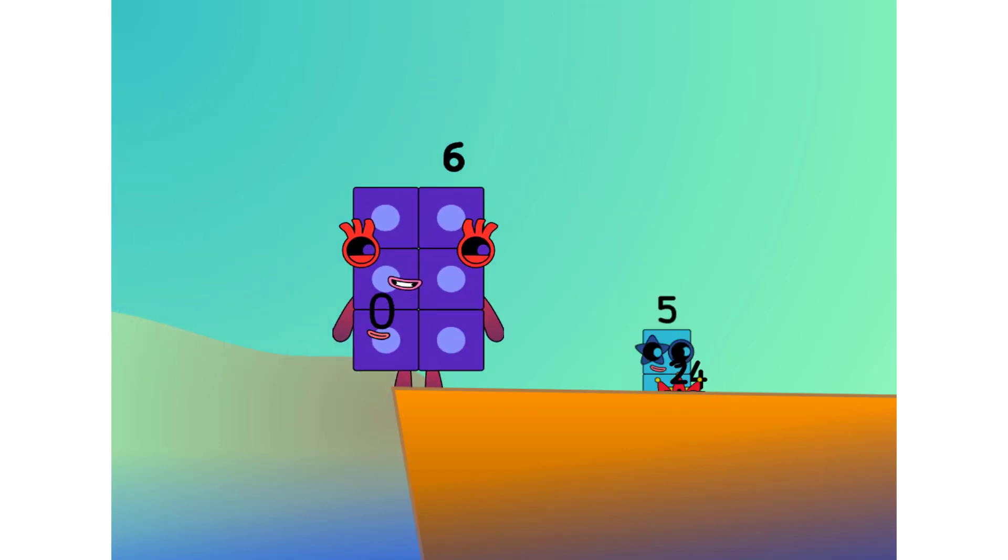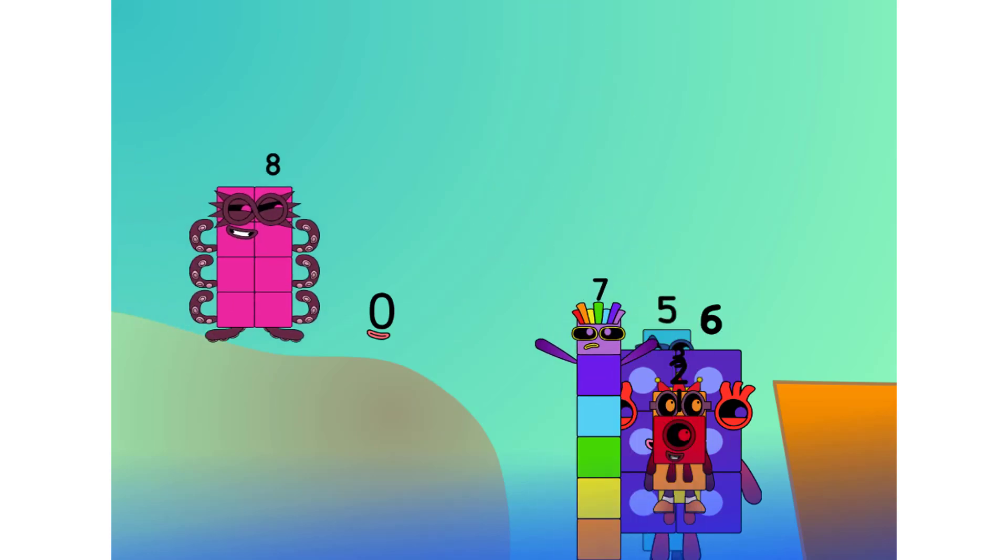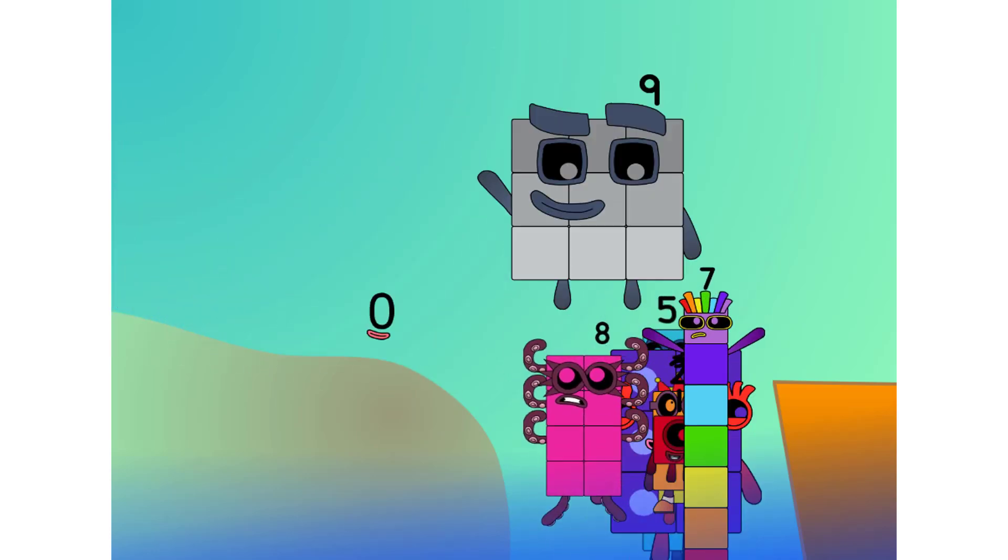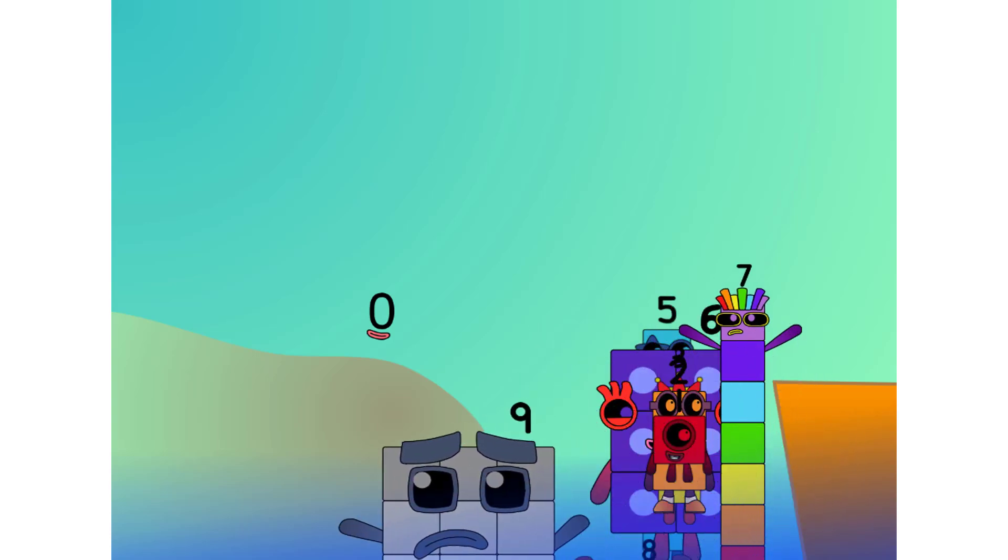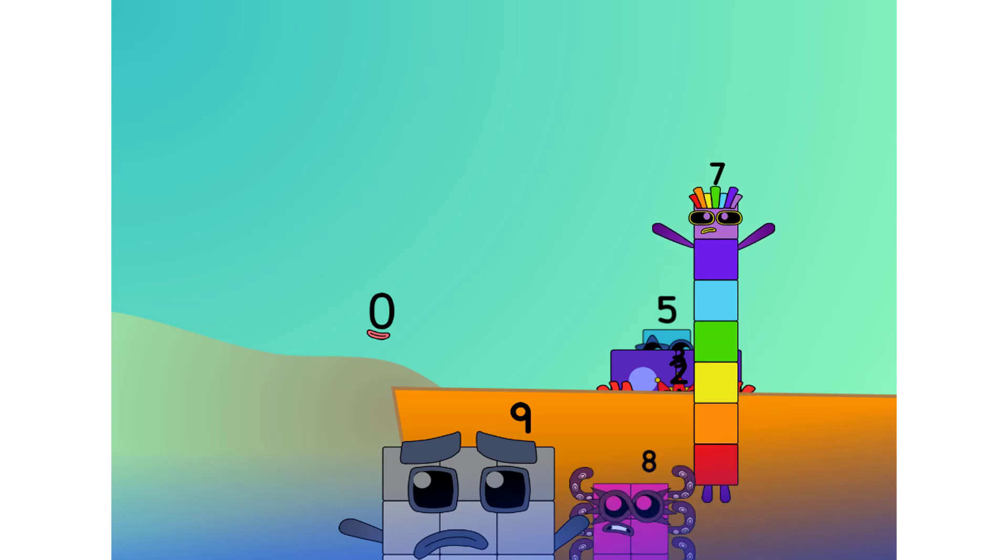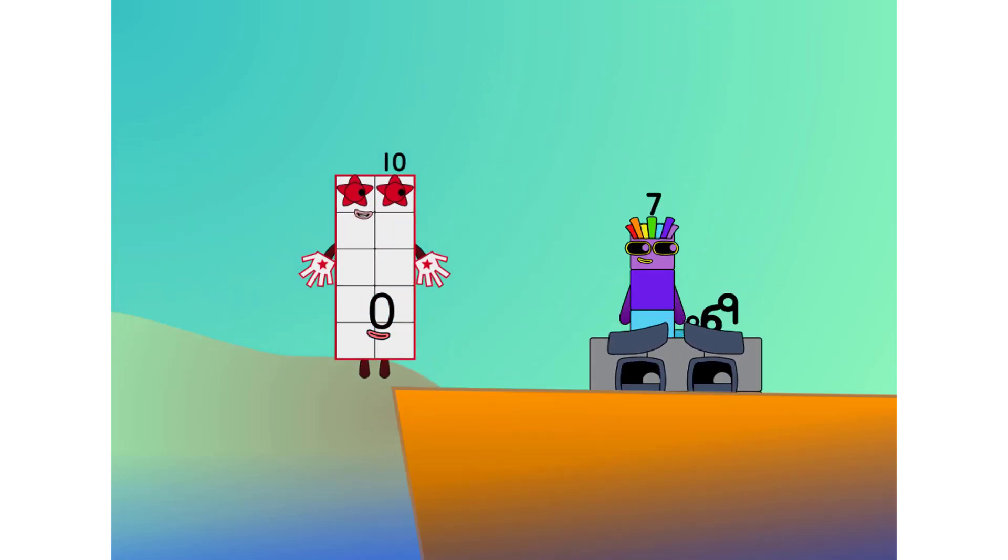Alright me hearties, into the boat you go. I have room for the numbers. Number 1, 2, move along lads, 3, 4, 5, 6, 7, step lively, 8, smartly now, move along 9. Blow me down, numbers overboard! Hang on lads, it's a good thing you know how to swim.